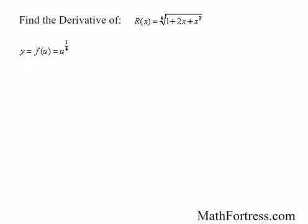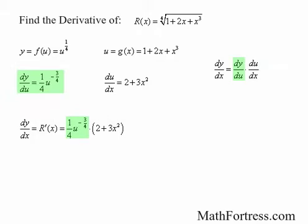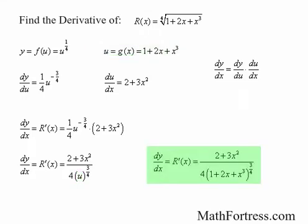Using Leibniz notation, we let y equal u to the power of one-fourth, so dy over du equals one-fourth times u to the power of negative three-fourths. We let u equal 1 plus 2x plus x cubed, so du over dx equals 2 plus 3x squared. Thus dy over dx equals one-fourth times u to the power of negative three-fourths times 2 plus 3x squared, which simplifies to 2 plus 3x squared over 4 times u to the power of three-fourths. Substituting u with g of x, the final answer is 2 plus 3x squared over 4 times 1 plus 2x plus x cubed, all raised to the power of three-fourths — the same answer as before.